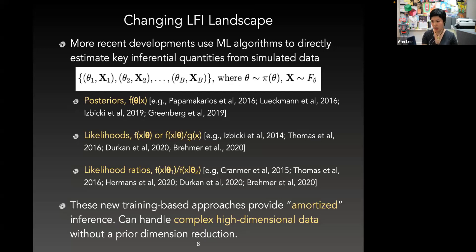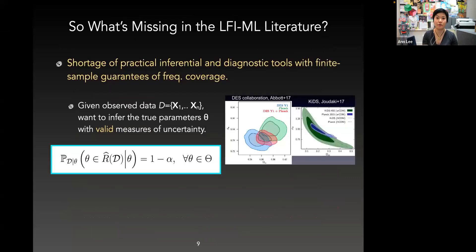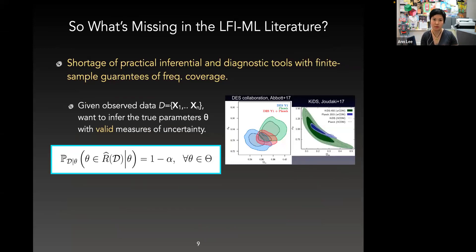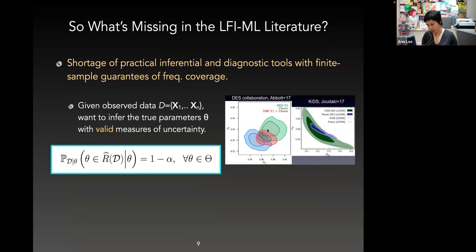So what's missing in the LFI or machine learning literature? There's a shortage of practical inferential and diagnostic tools that have finite-sample guarantees of frequency coverage. When the number of observations is small — for example, one observation or say ten — the question becomes: do these region estimates provide valid measures of uncertainty? Here are some pictures from cosmological analysis, where many domain scientists seek to constrain parameters of interest using simulation-based theoretical models. The question is: can you say that a constructed region estimate has a certain probability of including the true parameters with confidence level one minus alpha, no matter what the true parameter value is?